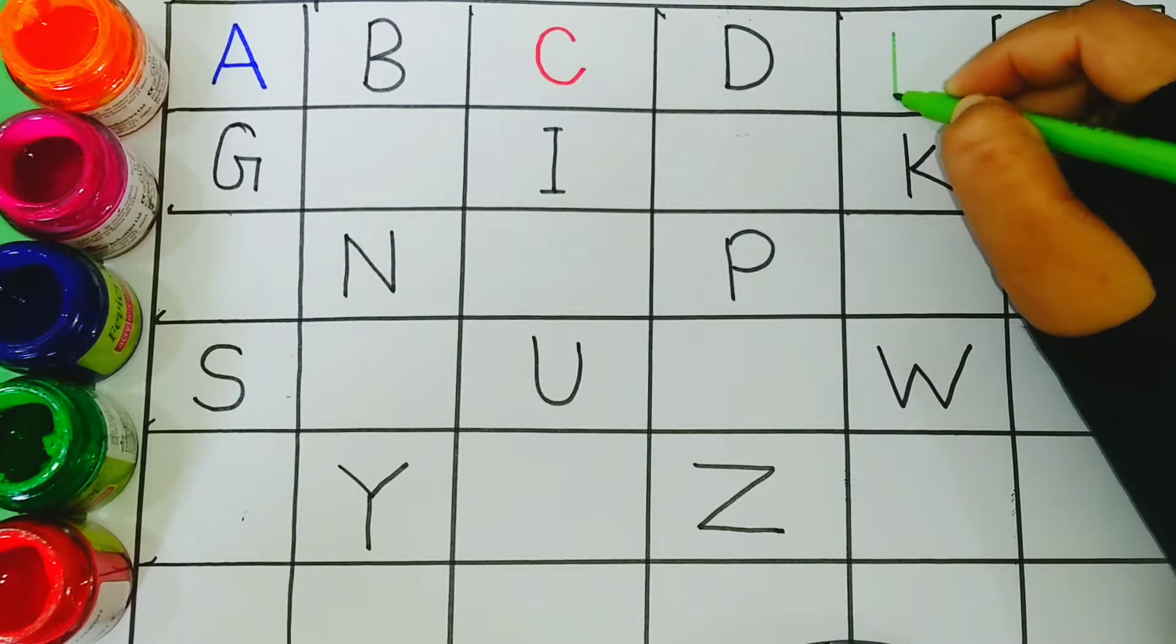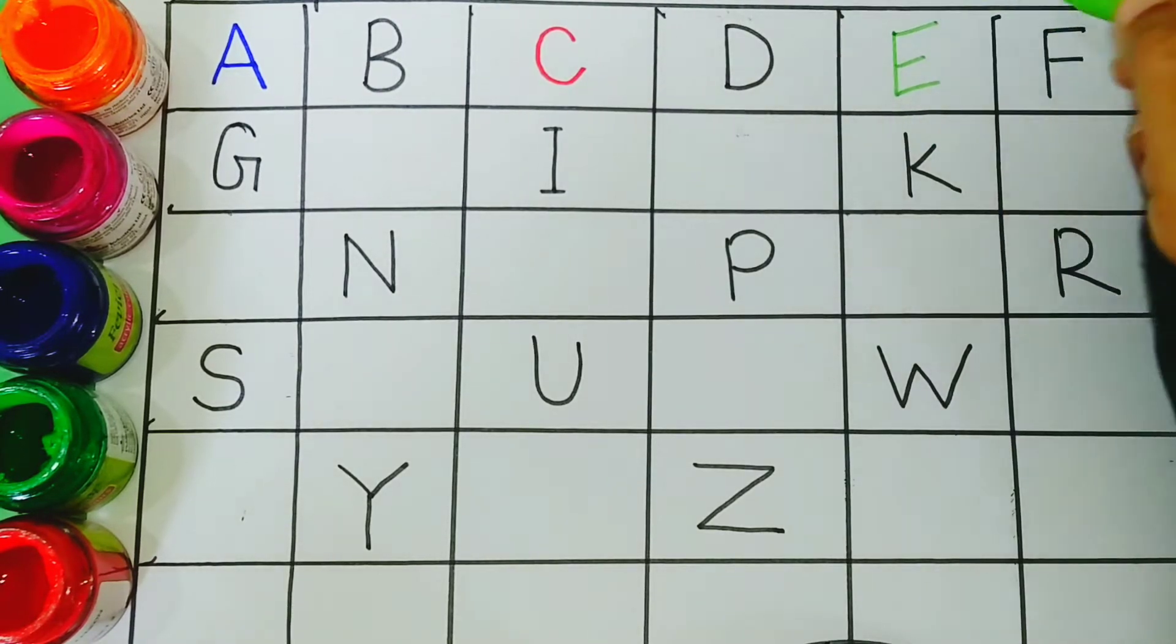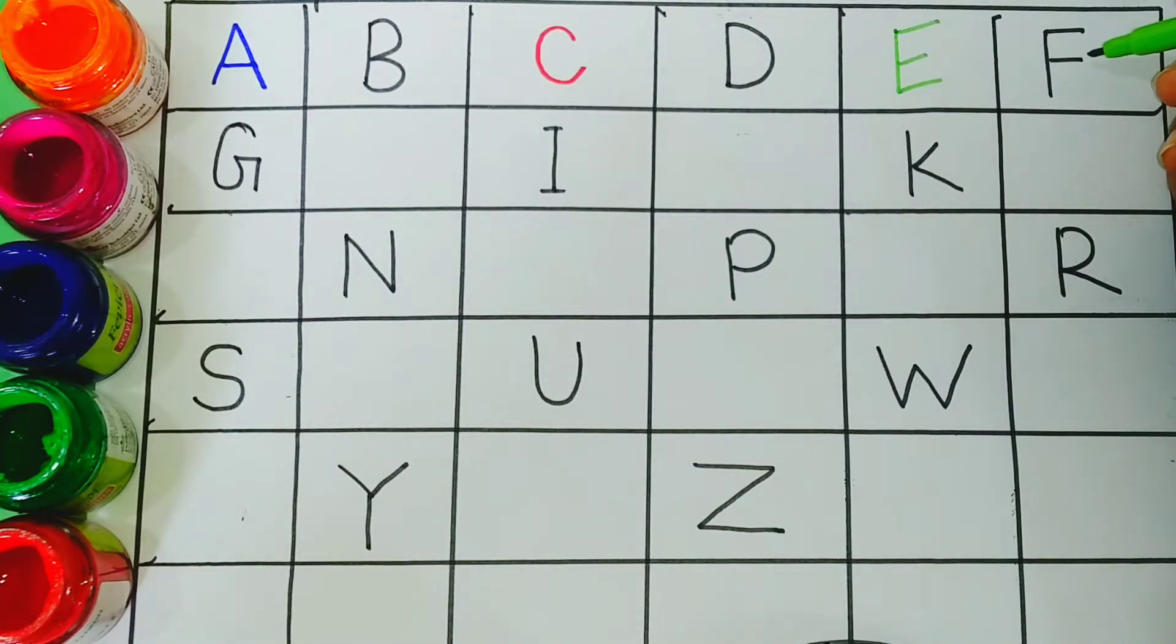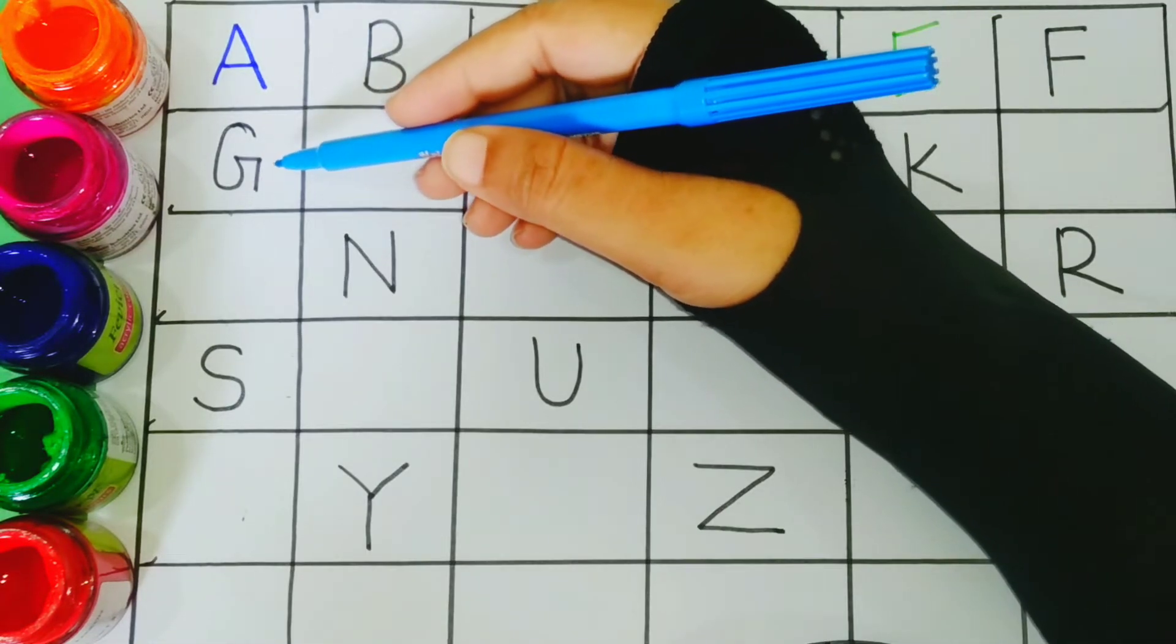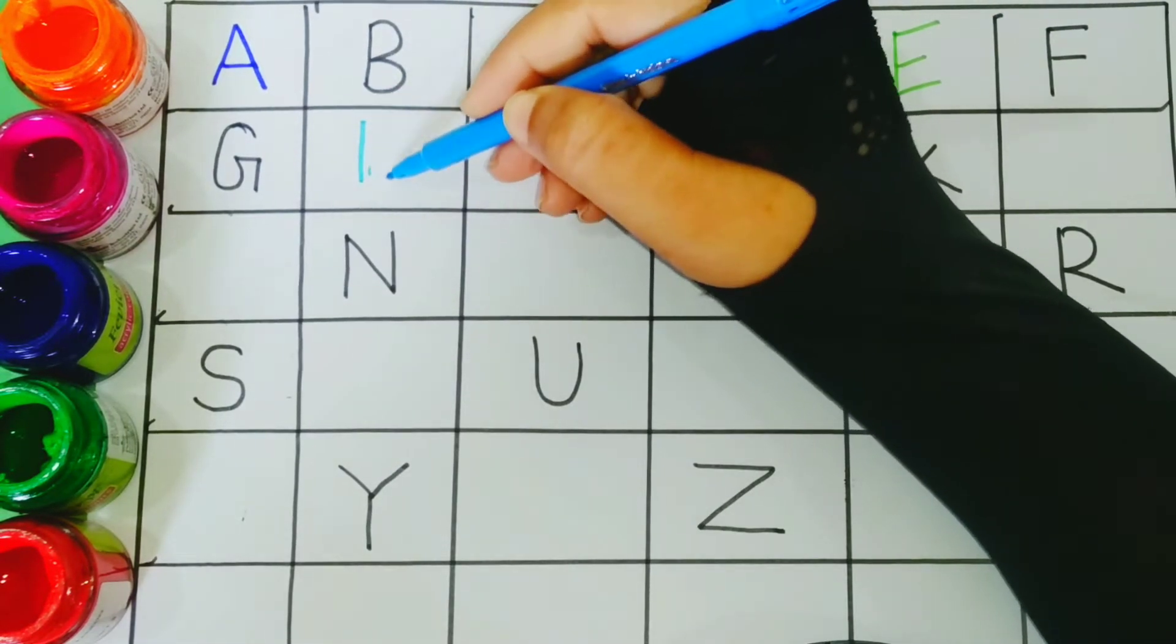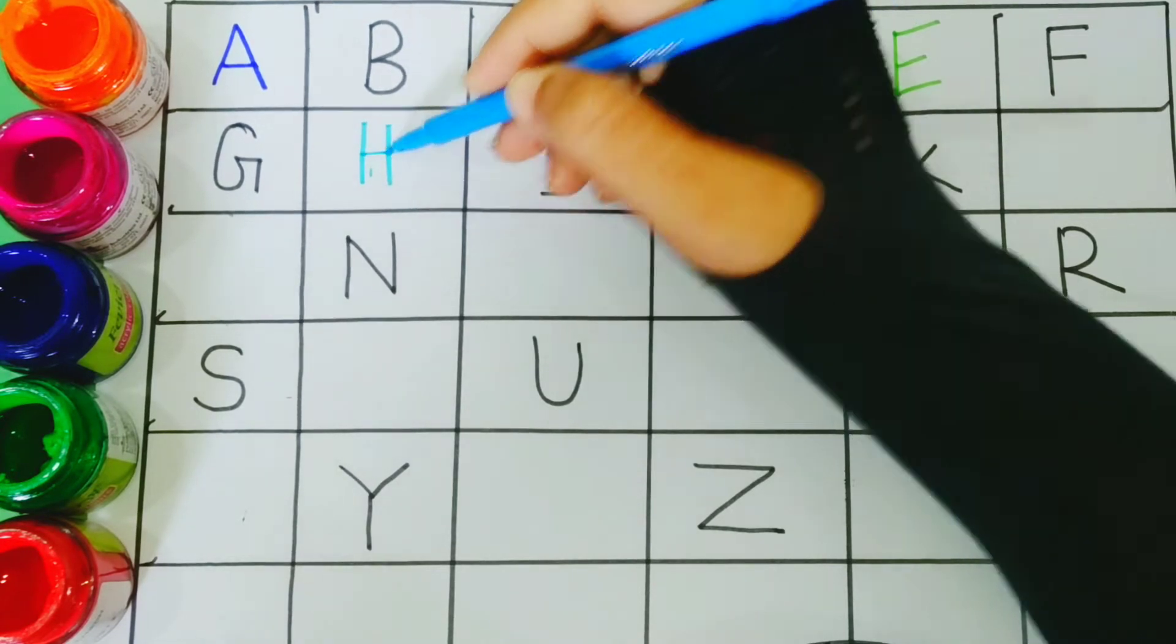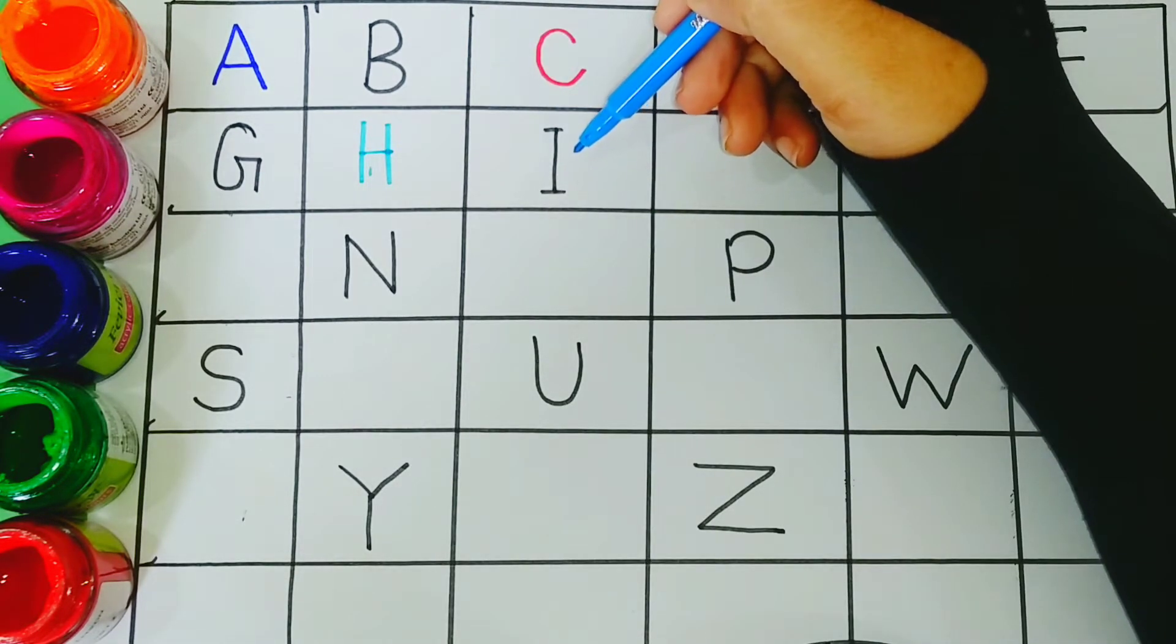E. E for egg. F. F for fish. G. G for goat. H. H for hen. I. I for ink.